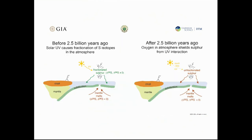The reason we want to study their sulfur isotopes is that sulfur happens to be a very important tracer for early Earth processes. We know that before 2.5 billion years ago, solar UV radiation caused a fractionation of sulfur isotopes in the atmosphere. After 2.5 billion years, we don't see that fractionation anymore. Modern atmospheric sulfur is unfractionated.